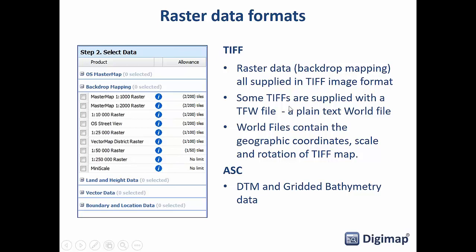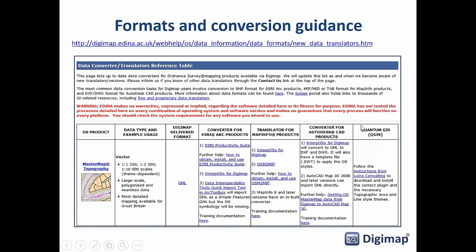For raster data formats: TIFFs and ASC files for DTM grids and bathymetry. As mentioned, some come as GeoTIFFs and some come with a world file — they're very simple, just drop them into QGIS and you'll be able to see them. There is a format and conversion guide in the help pages. These slides will be available after the webinar, and the QGIS column in that guide will tell you the best formats and best ways to use the data in QGIS.